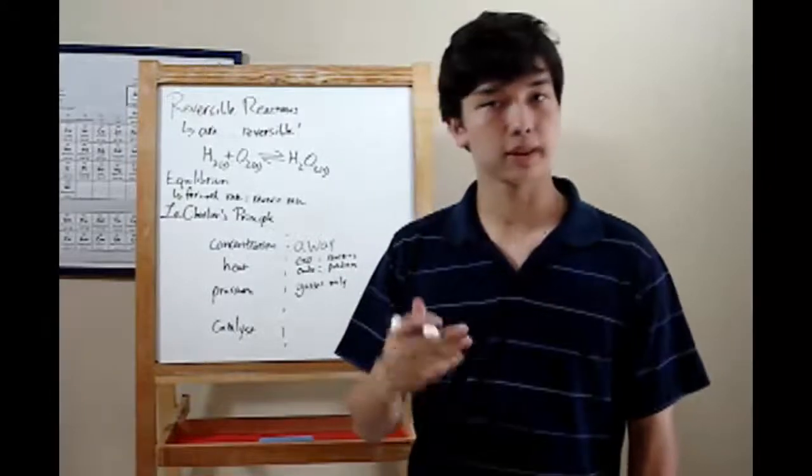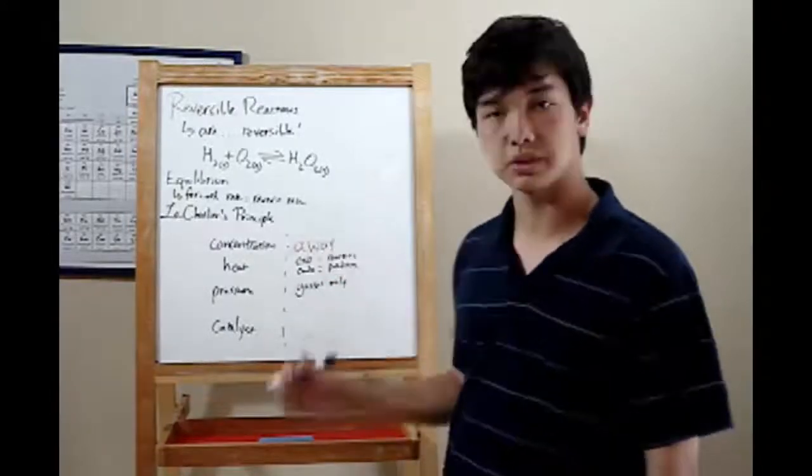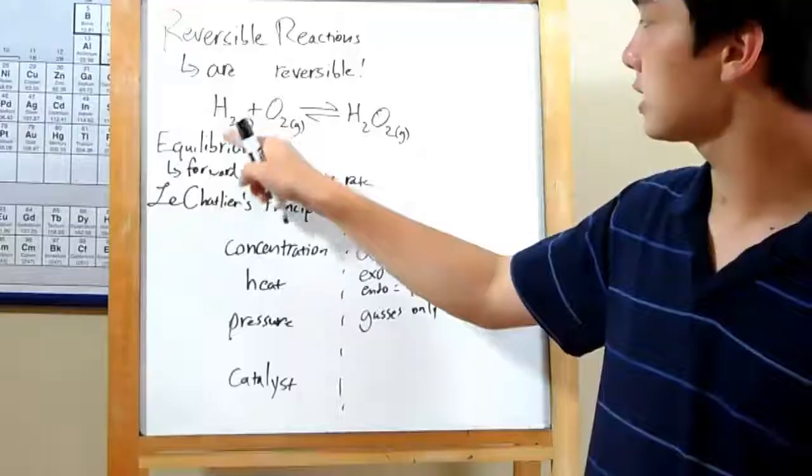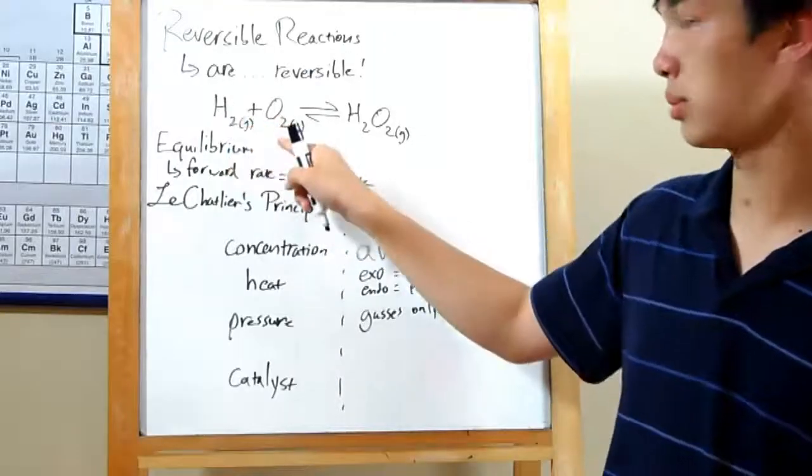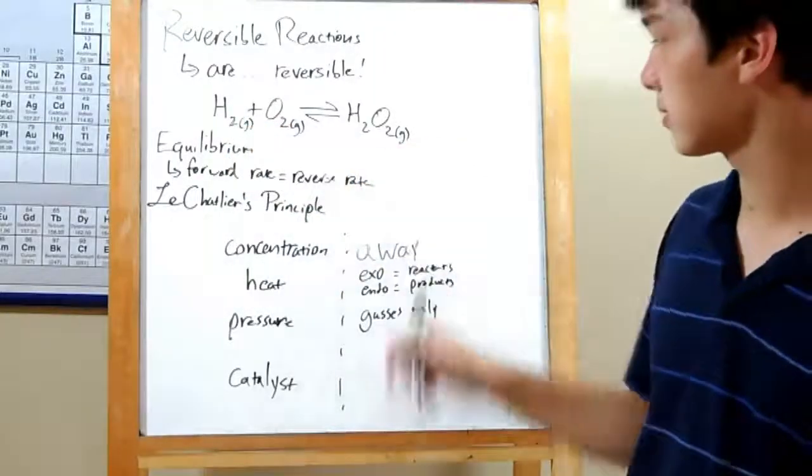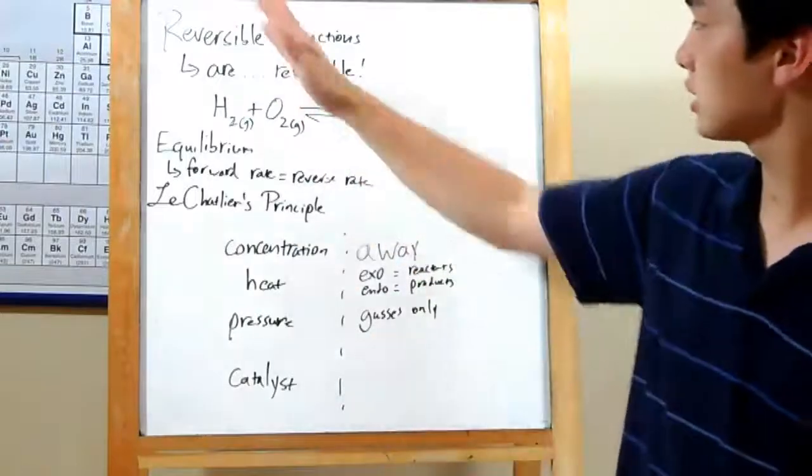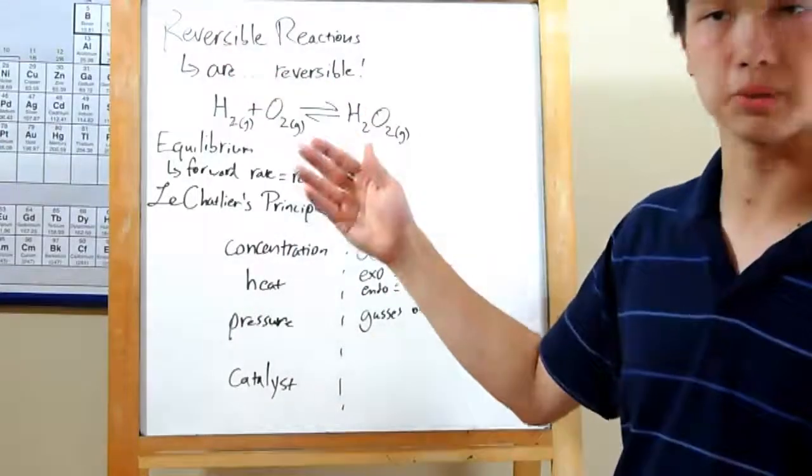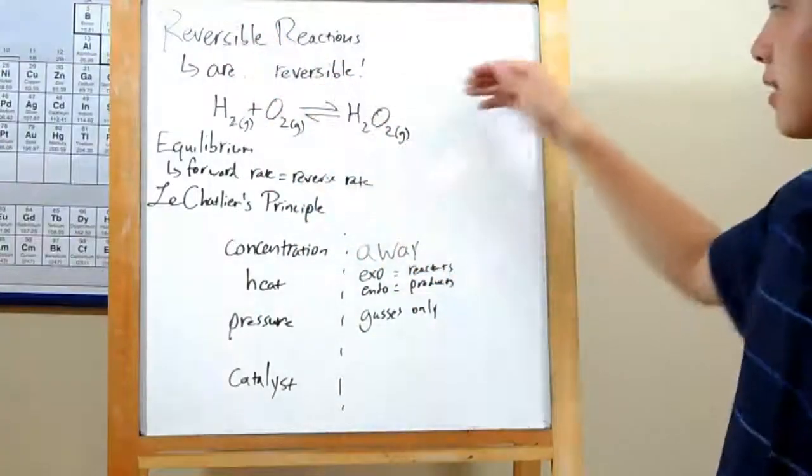Increasing pressure will affect the side with the most moles of gas. This one has two moles of gas, one mole of H2 and one mole of O2. This side has only one. If you increase the pressure, it will shift away from the side with the most moles of gas, this one. So it will create a lot of H2O2.